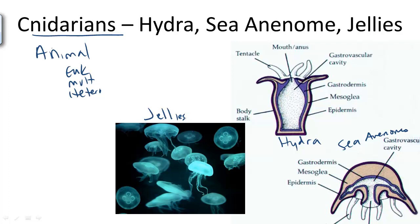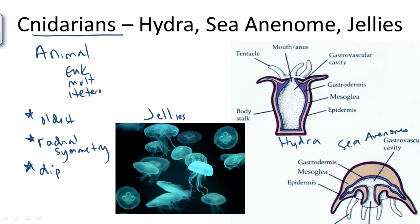In evolutionary terms, Cnidarians are one of the oldest animal groups, next to sponges. What makes them so primitive? Well, they have radial symmetry, as opposed to the more complex organisms that have bilateral symmetry. And they are diploblasts, meaning that they only have two germ layers in their early development, as opposed to three in more complex animals.